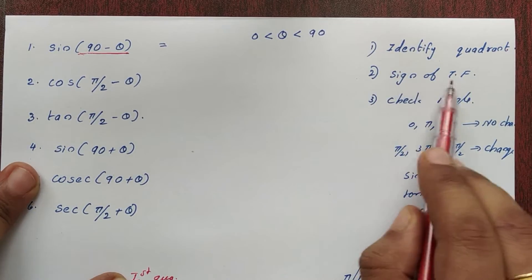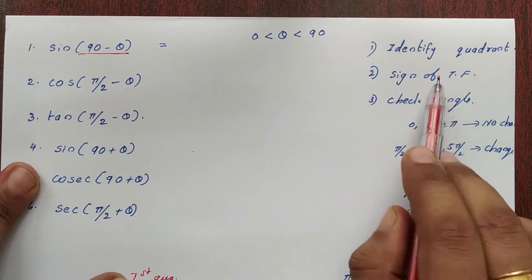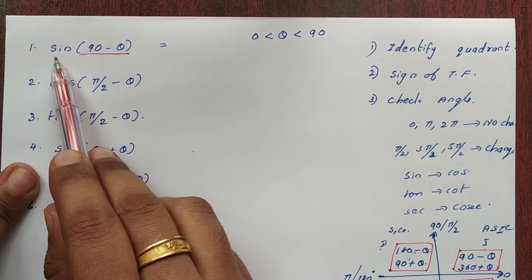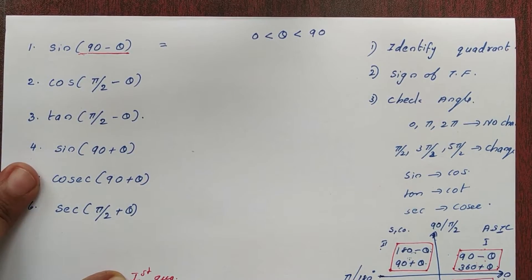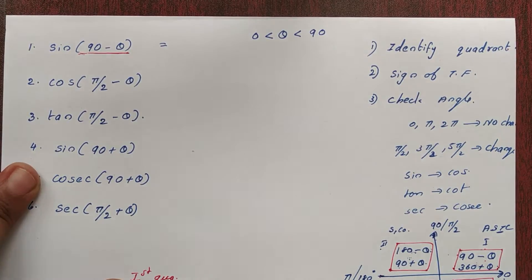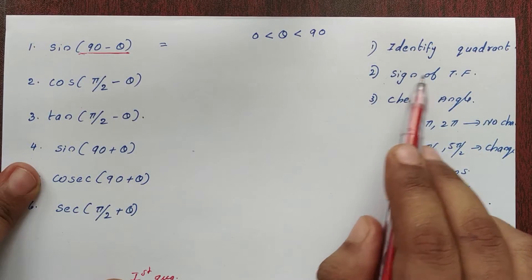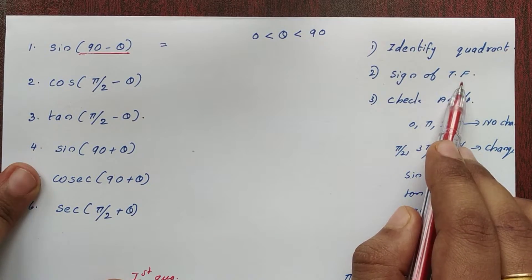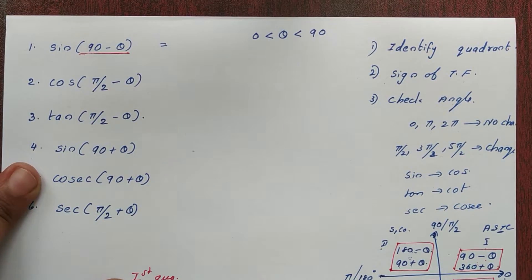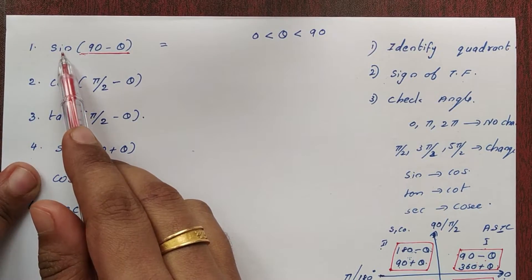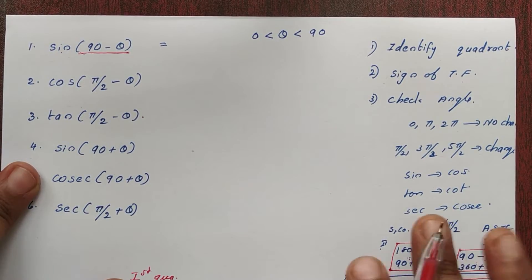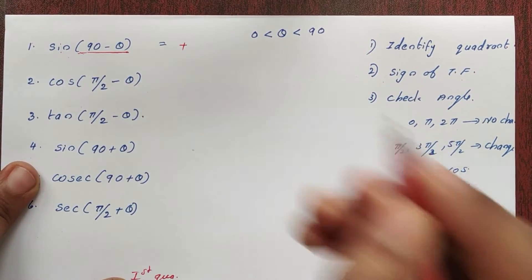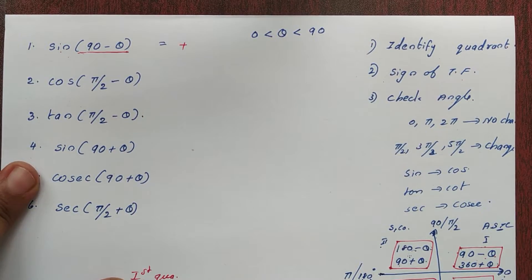Check the sign of the trigonometric function. The function here is sin. In the first quadrant, all trigonometric functions are positive, so sin is positive.